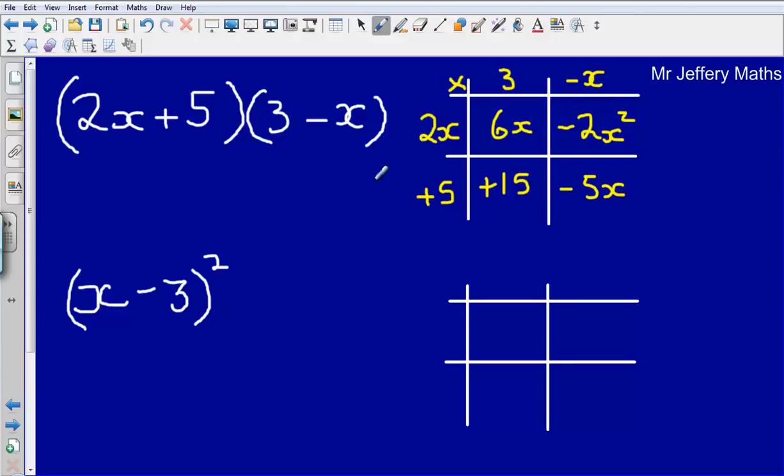Now I like to start off by writing out everything that's in our brackets, starting with the highest power that I have. So I've got minus 2x squared, then I've got plus 6x, minus 5x, and plus 15.